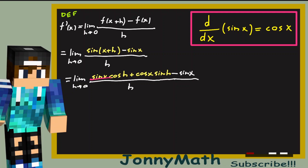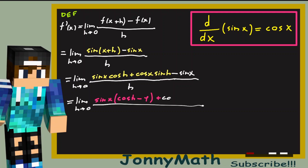Notice that we have a sine of x right here and a sine of x also right here, so we can put them together and factor out sine of x. This is just the limit as h approaches 0 of sine of x times the quantity cosine of h minus 1, plus cosine of x times sine of h, all divided by h.